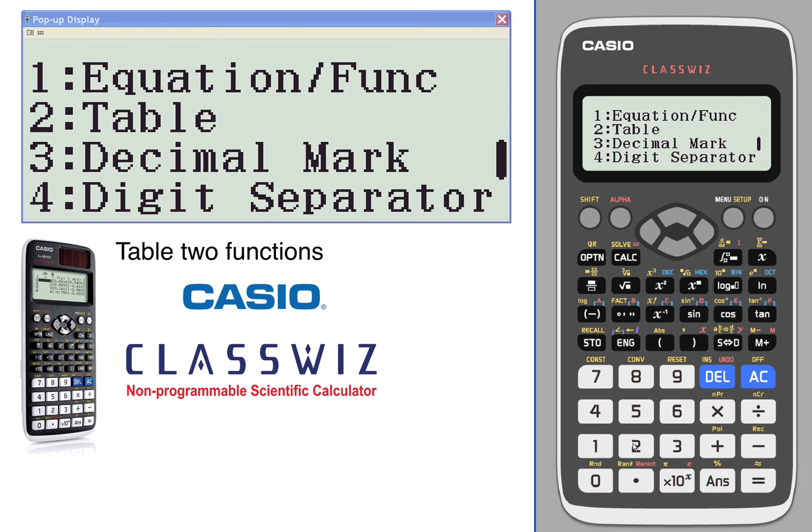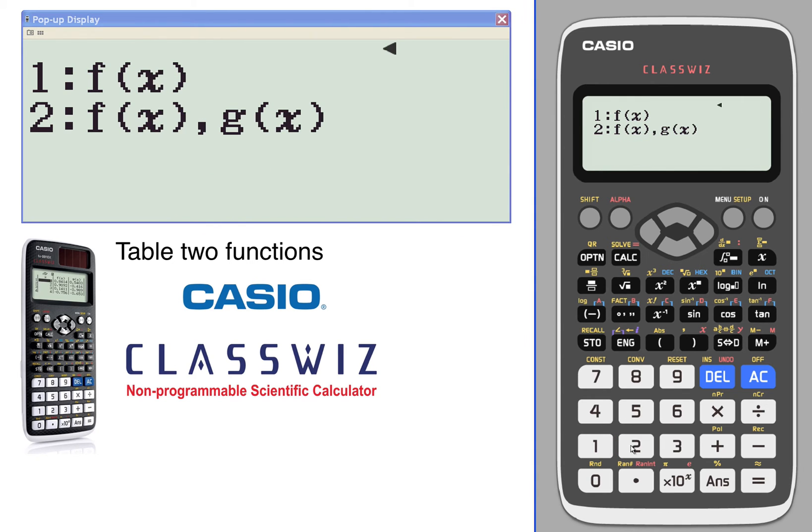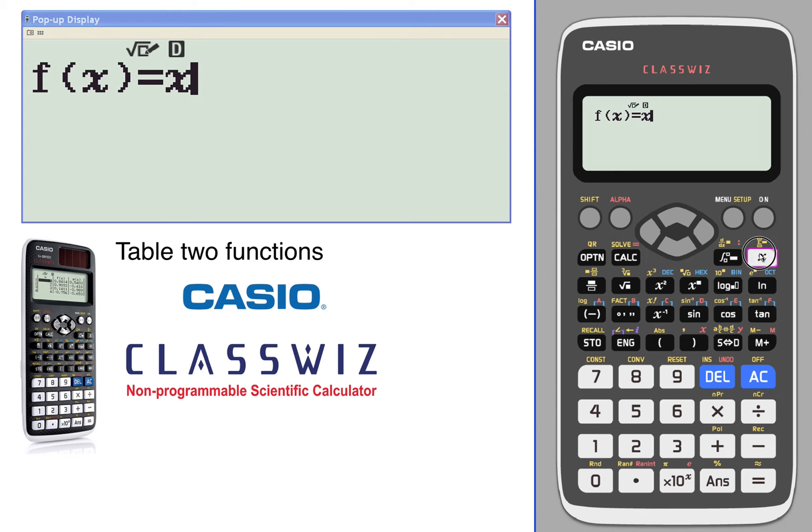We'll toggle down till we see table number two and select option number two, so we're going to have two functions. Let's do a quadratic, x squared minus four, and for the second function, let's pick a linear, x plus two.